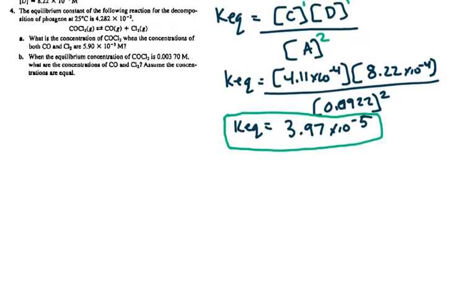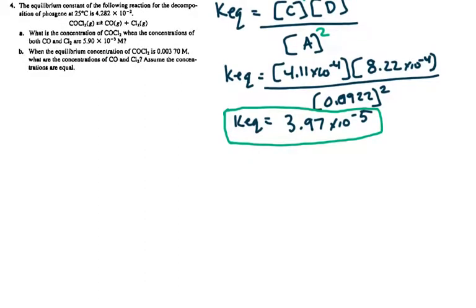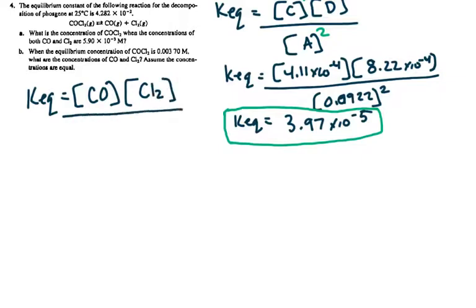Moving on to number 4. Number 4 says the equilibrium constant for the following reaction — the decomposition of phosgene — at 25 degrees Celsius is 4.282×10⁻². Before I start plugging in information, I'm just going to write my equilibrium expression. Remember, it's products over reactants, only gases apply, and you put it to the power of whatever the coefficient is. So I have the concentration of carbon monoxide since that's a gas, the concentration of chlorine gas, over the concentration of COCl₂. I'll double check — 1 carbon, 1 oxygen, 2 chlorine on each side. So it's balanced.